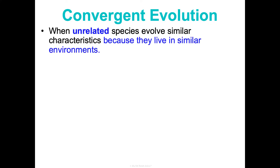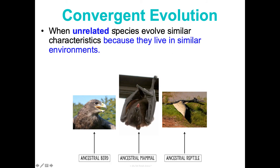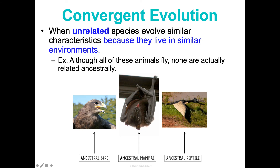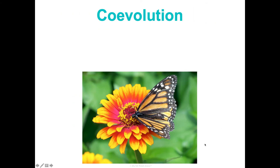Convergent evolution is the opposite — species that aren't actually related evolutionarily but have evolved similar characteristics because they live in similar environments. You might look at them and think they're related, but they're not. For example, birds, bats, and pterodactyls all have wings because they all live in the sky and fly. But a falcon is an ancestral bird, bats are mammals, and pterodactyls are related to reptiles — so evolutionarily speaking, they aren't closely related.